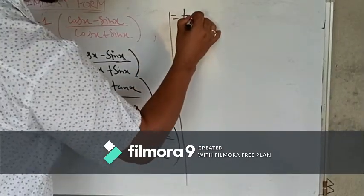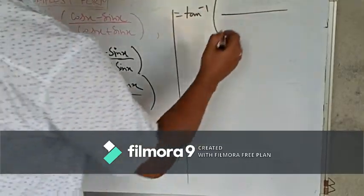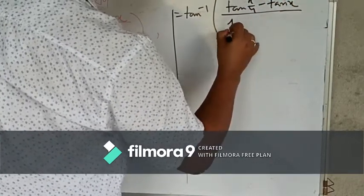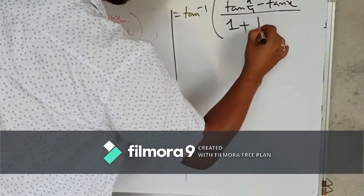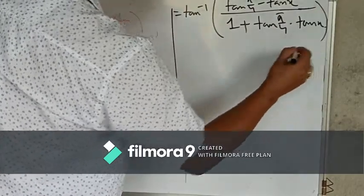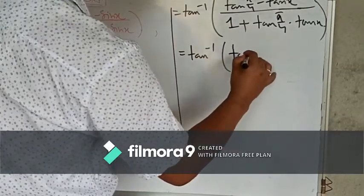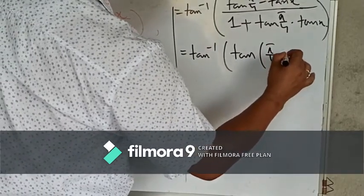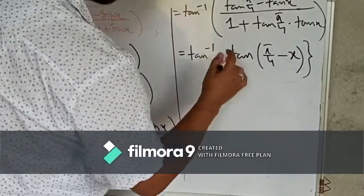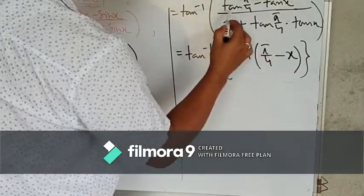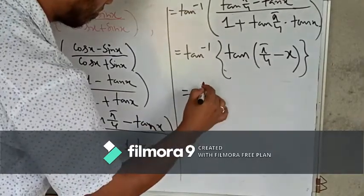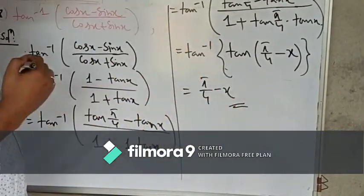Then applying the tan(a minus b) formula — tan a minus b equals tan a minus tan b divided by 1 plus tan a tan b — so tan inverse of tan(pi by 4 minus x) gives us pi by 4 minus x. This is the simplest form.